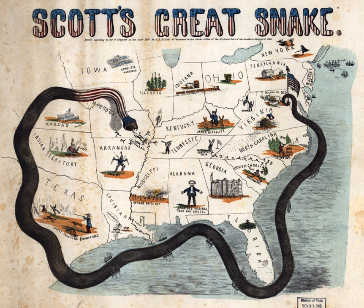Union naval activities in this theater were dictated by the Anaconda Plan, with its emphasis on strangling the South with an ever-tightening blockade, and later in executing attacks on and occupying the port cities of New Orleans, Mobile, and Galveston. The Confederate response was mainly limited to blockade running and the Confederate Navy reacting defensively to Union incursions, with mixed success.